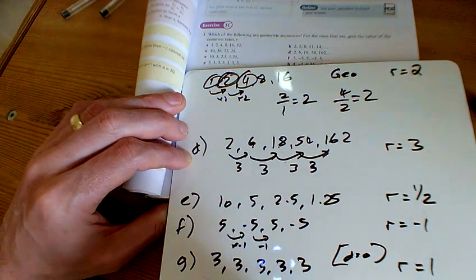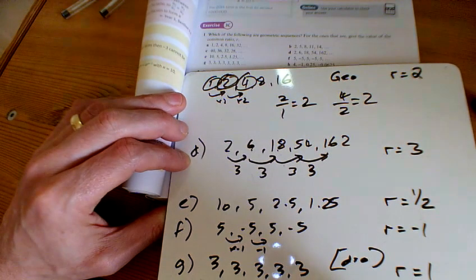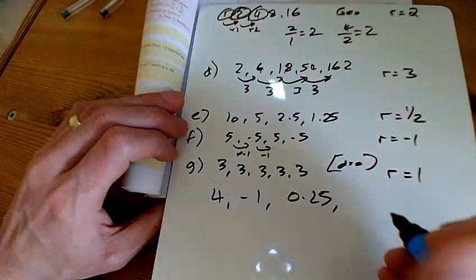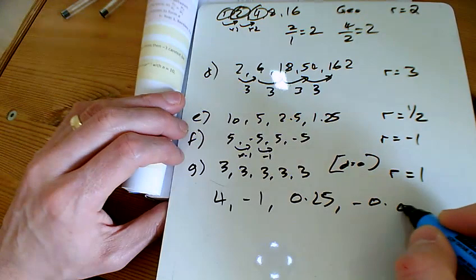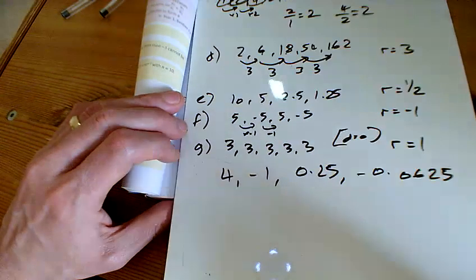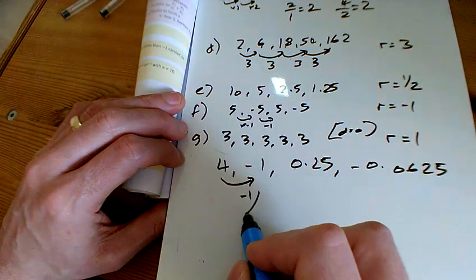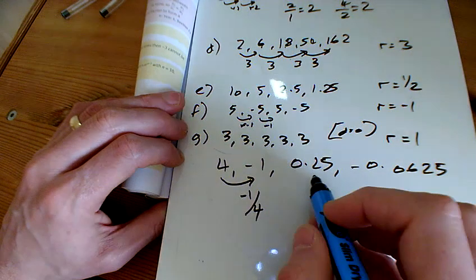What about that last one? So 4, minus 1, 0.5, minus 0.0625. We think this is geometric. We'll check. If we do minus 1 divided by 4, we get minus a quarter.